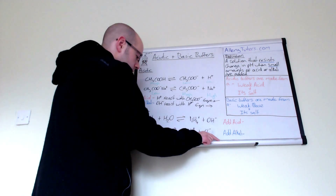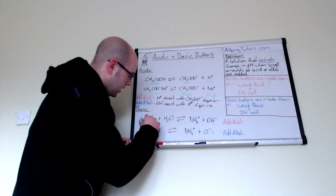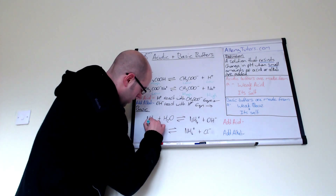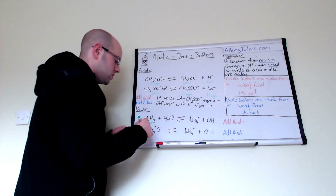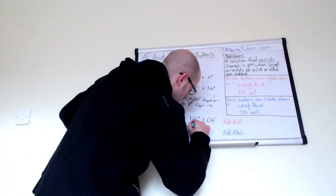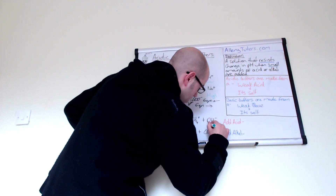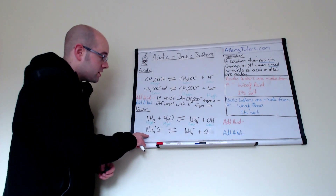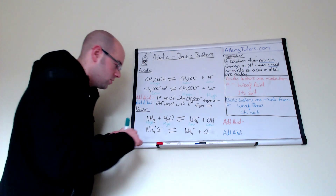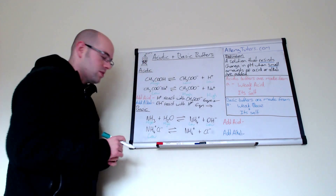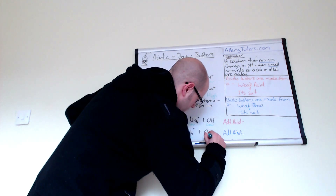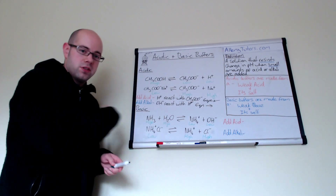Just like what we've done for the acidic buffer, we're going to write down our concentrations. This is a weak base, so it doesn't dissociate very well. We actually have a high amount of ammonia and water. On the salt side, ammonium chloride dissociates readily in solution, so you won't have a large concentration of salt — that's low. Because it dissociates quite readily, we produce high amounts of the ions it breaks up into, meaning high amounts of ammonium ions and chloride ions.